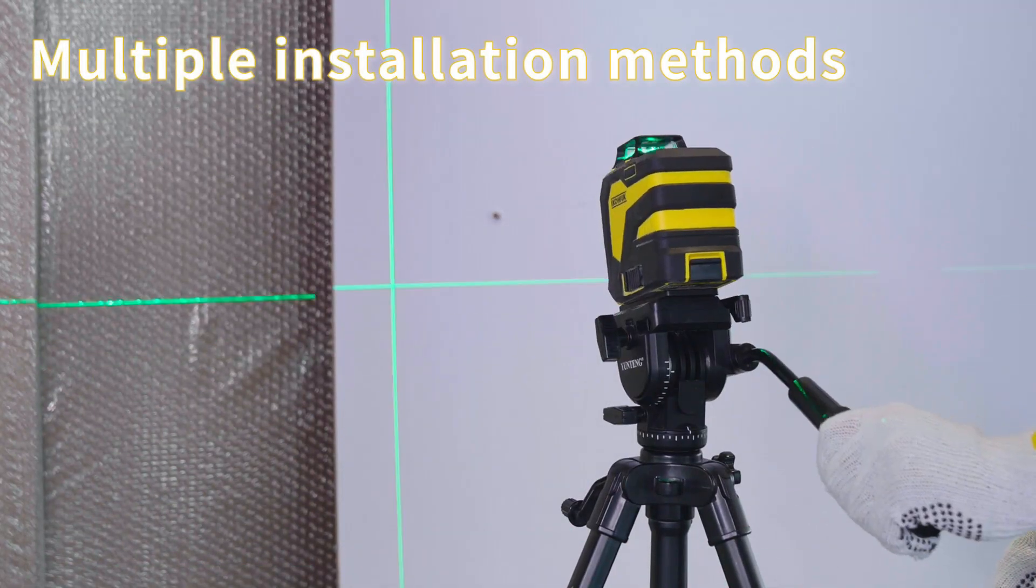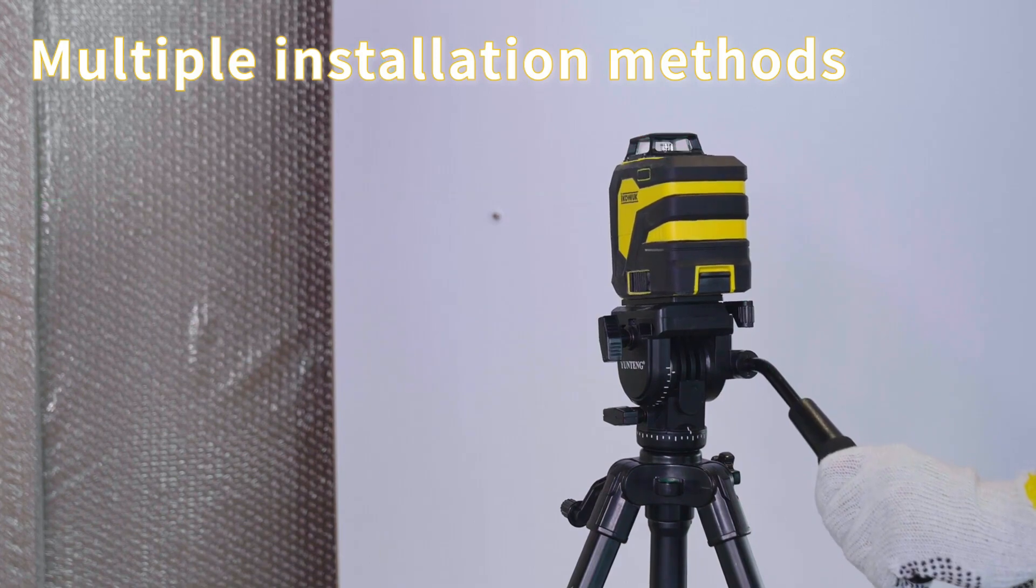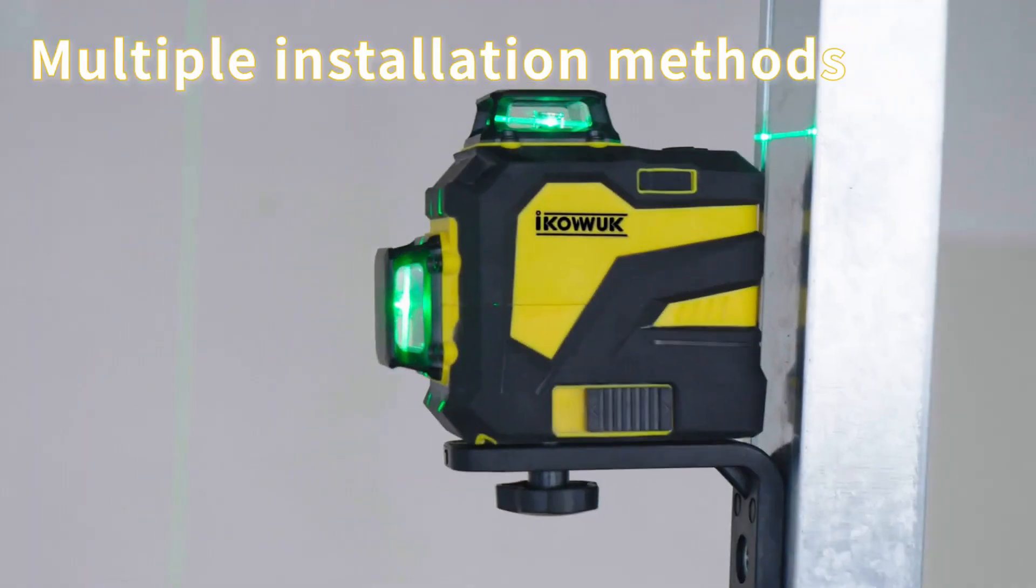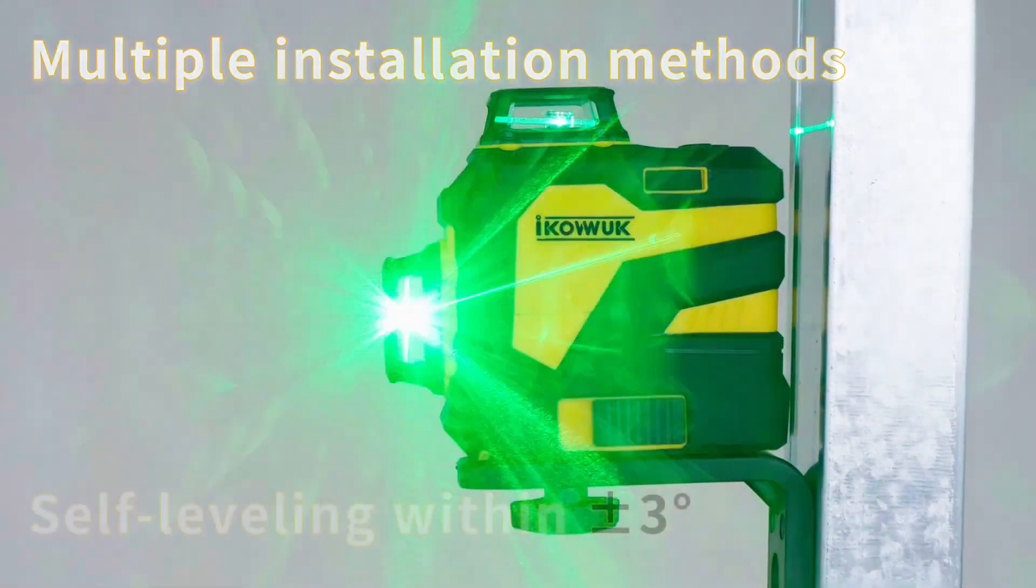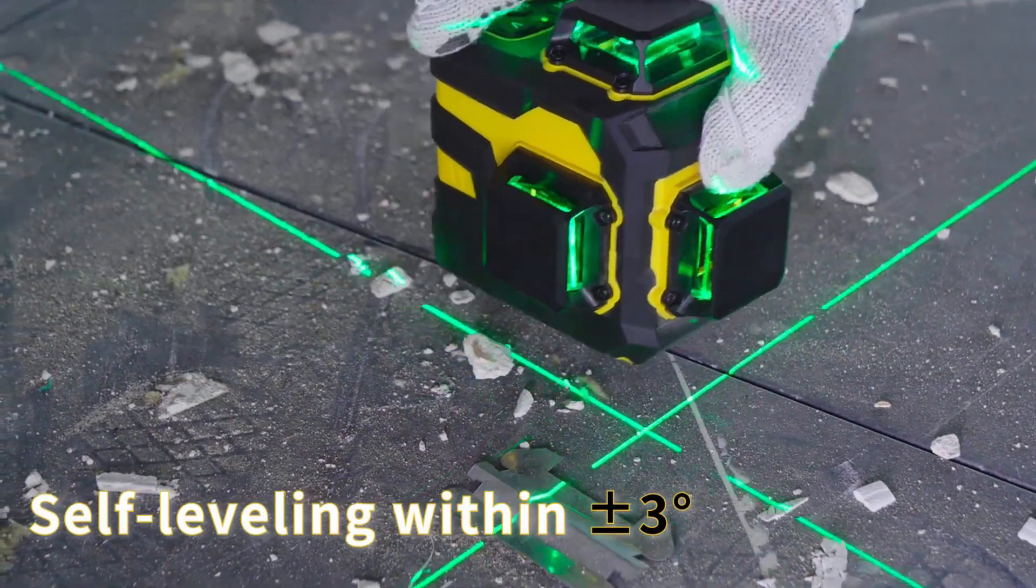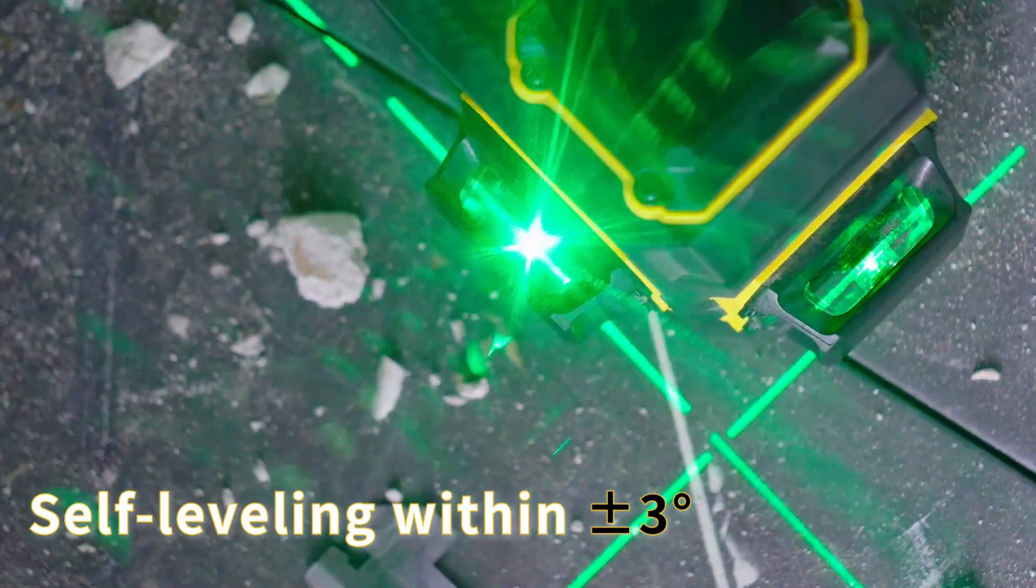The ECOVUK 12 lines laser level is equipped with a remote control function, allowing for quick and easy adjustments to the laser line without needing to return to the machine during work. The remote control range can reach up to 16 feet, it can be controlled even through walls.